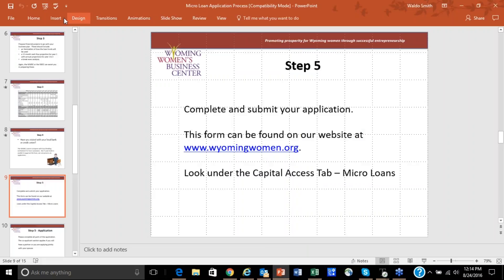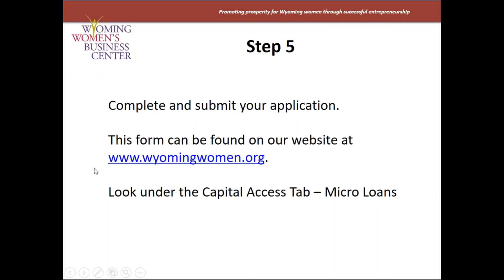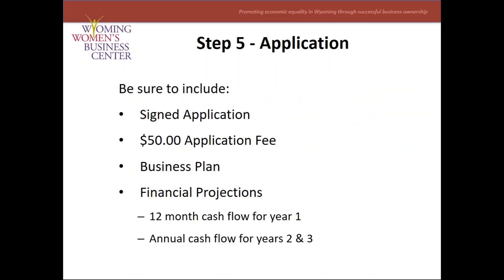You can submit by mail, drop off, or whatever is most convenient for you. Print out the application — or download it, fill it out, and then print it. If you have a co-applicant, such as a spouse or a partner, they would fill out the co-applicant section. Fill it out as completely as you can, and if you have any questions, contact us and we can walk you through it. We will need a signed application and a $50 application fee.